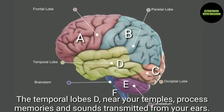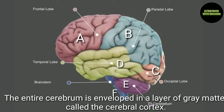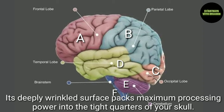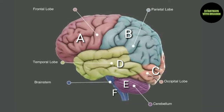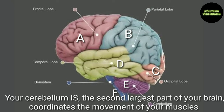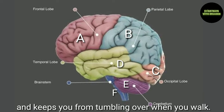The temporal lobe, near your temples, processes memories. The entire cerebellum is enveloped in a layer of gray matter called the cerebral cortex, whose deeply wrinkled surface packs maximum processing power into the tight quarters of your skull. Your cerebellum, the second largest part of your brain, coordinates the movement of your muscles and keeps you from tumbling over when you walk.